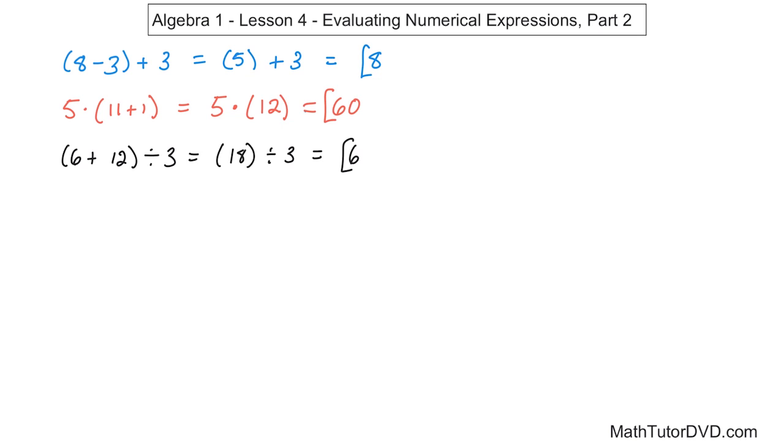What if we have 29 minus, in parentheses, 0 times 9? So again, we do what's inside the parentheses first. The 29 comes along for the ride. 0 times 9 is just going to give you...